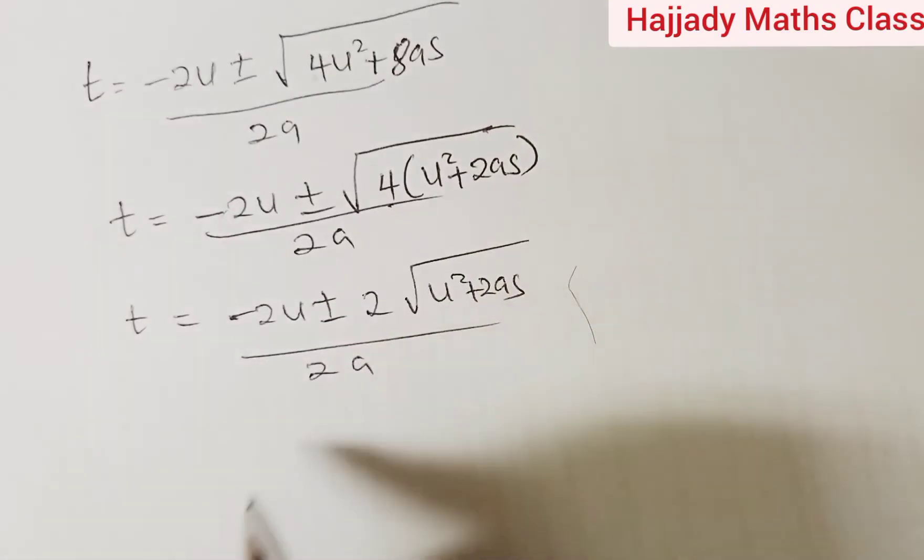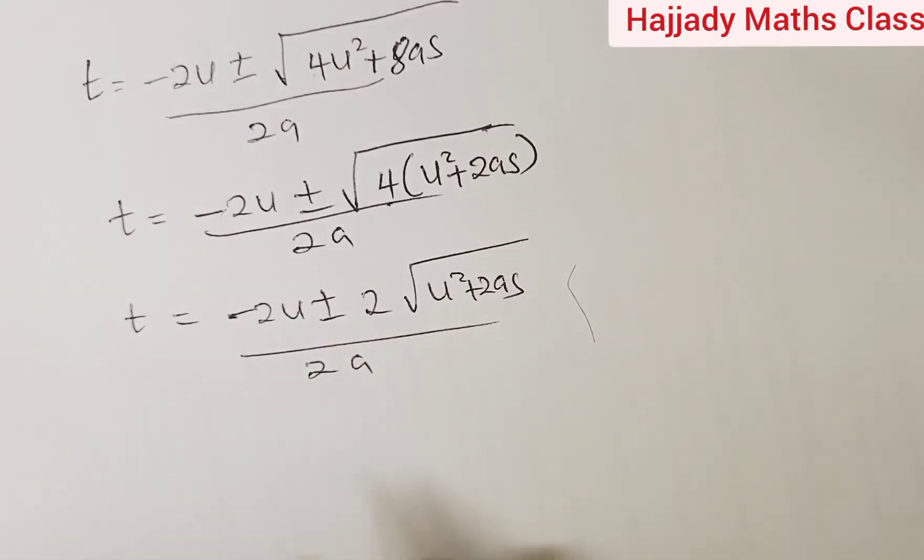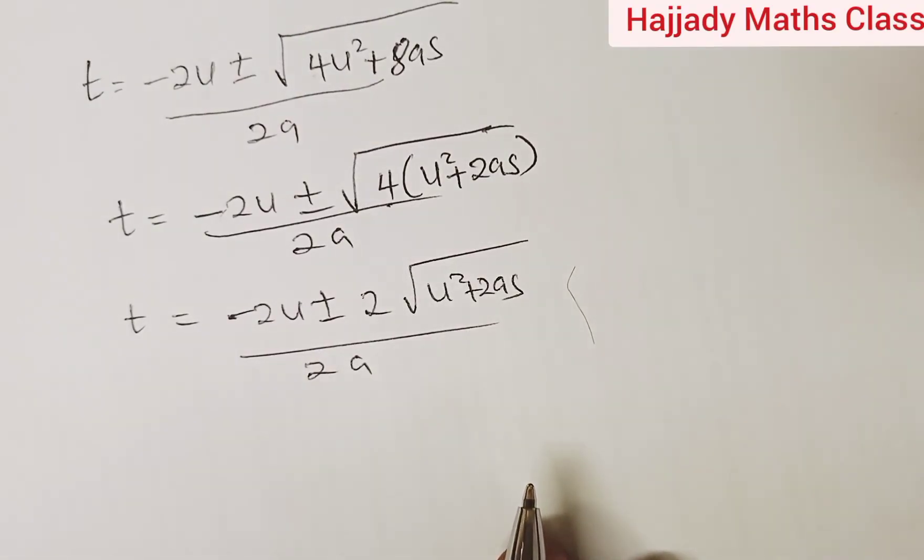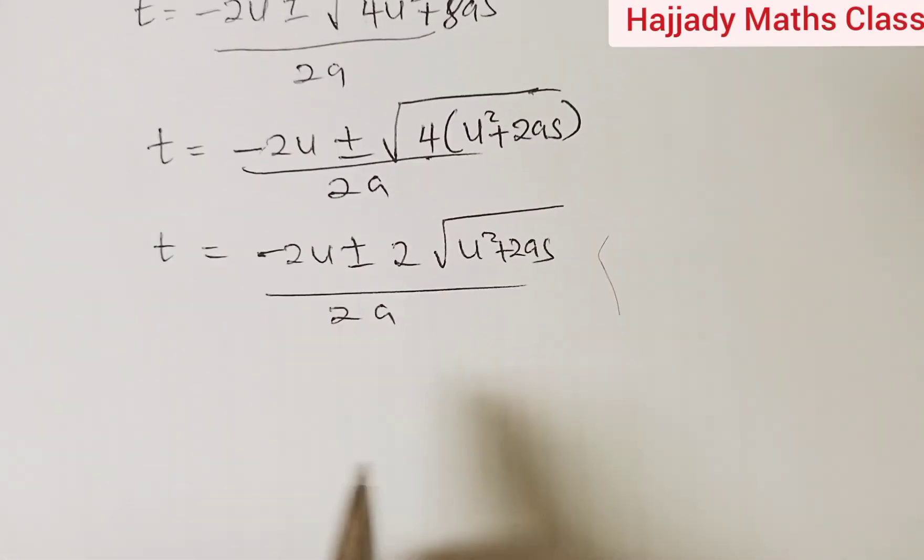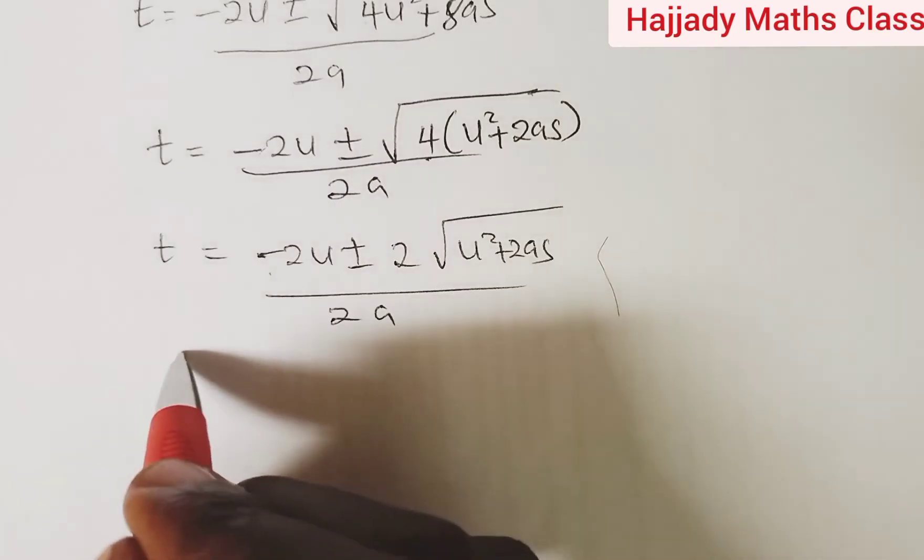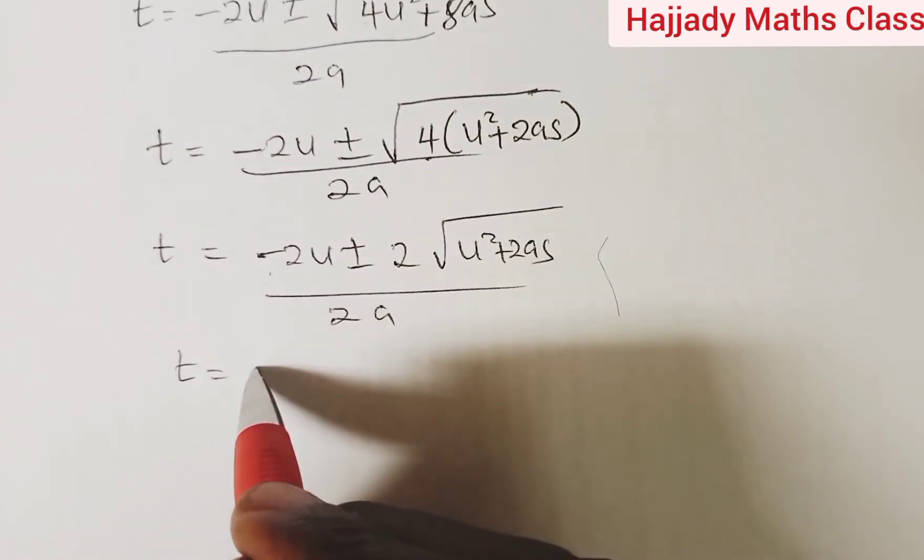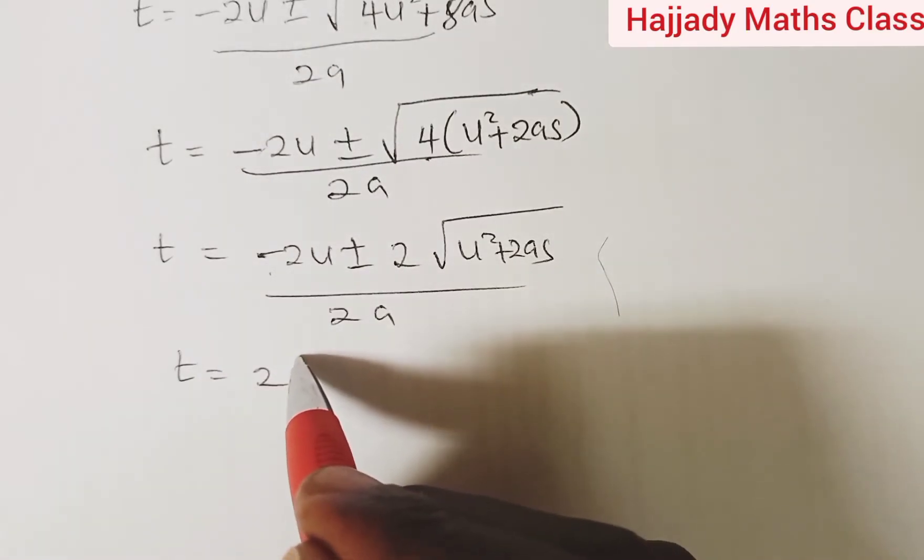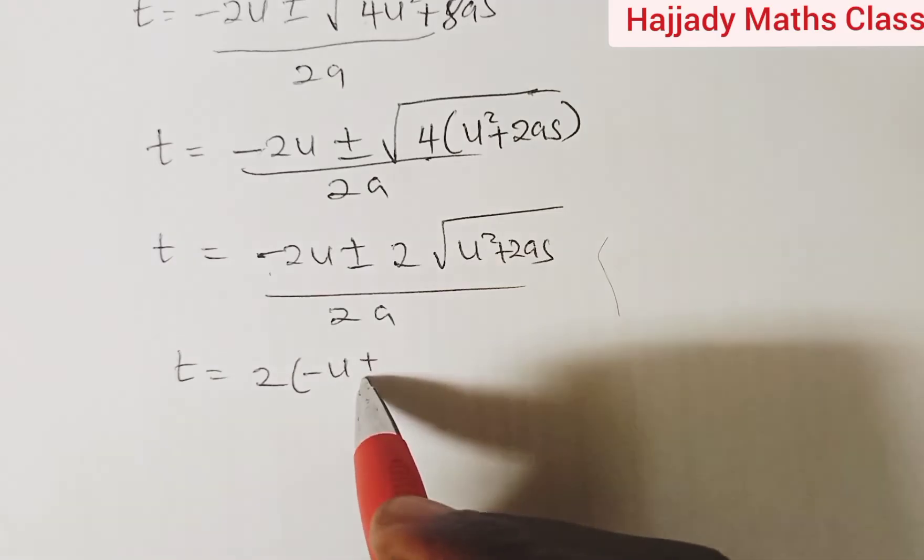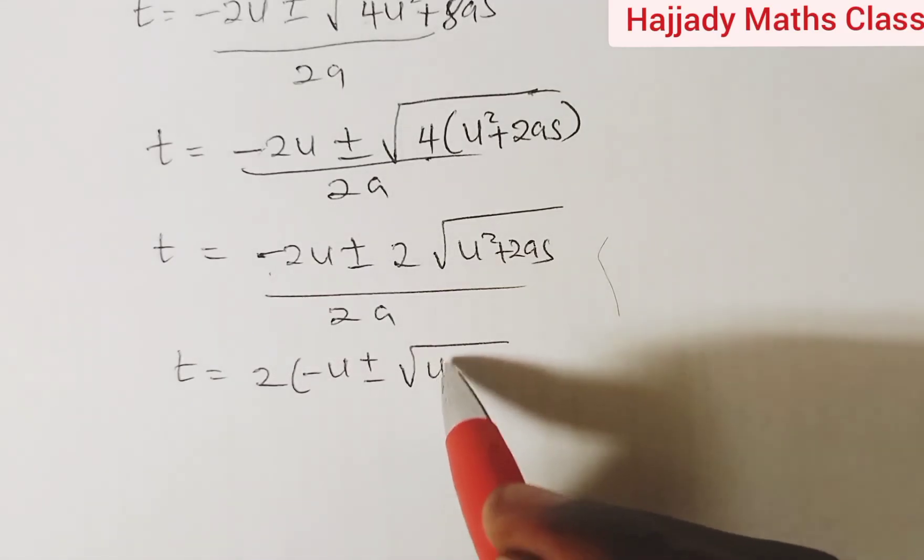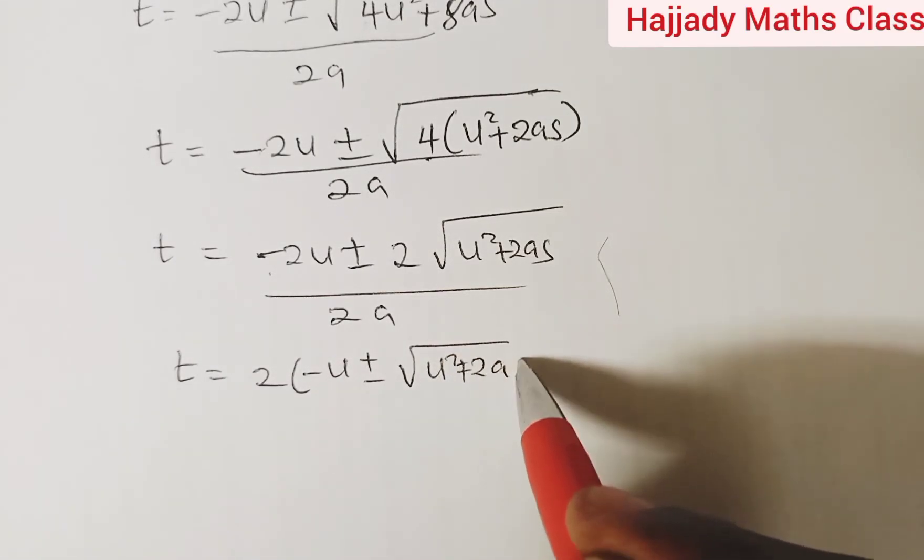From this, it is very obvious that 2 is common to both sides here. So our t equals 2 into bracket minus u plus or minus root u squared plus 2as, all over 2a.